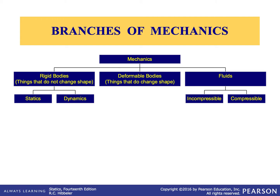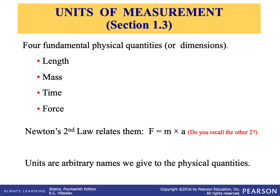We've learned about mechanics and its branches. Now, what units of measurement should we use in analyzing mechanical systems? We have four fundamental physical quantities from physics: length, mass, time, and force. We need to be able to quantify those and use them. Length is used to locate the position of a point in space and thereby describe the size of any physical system — essentially distance and geometric properties of a body.